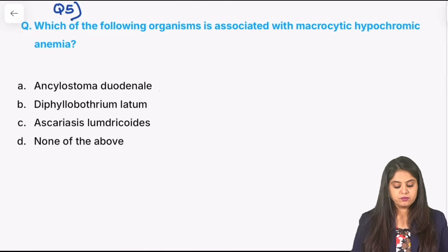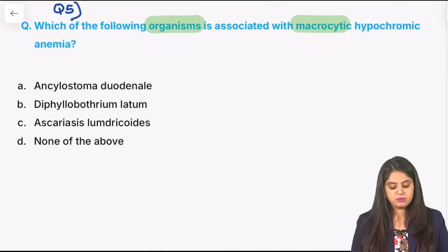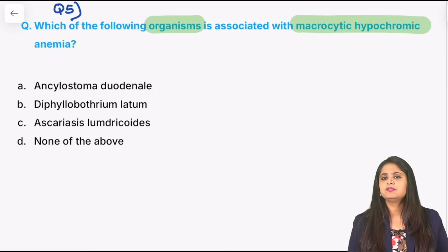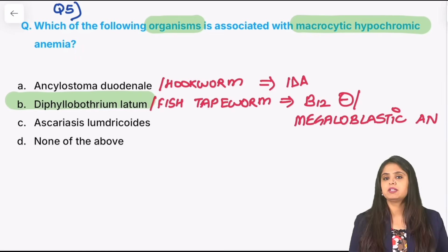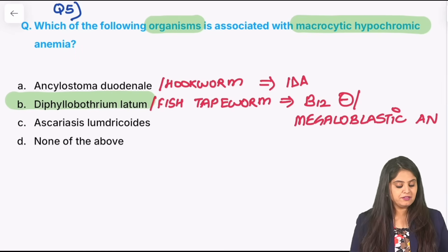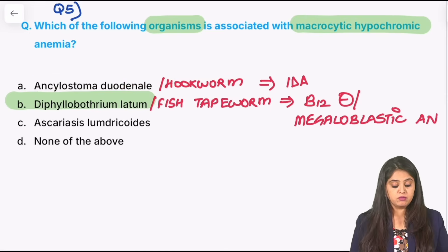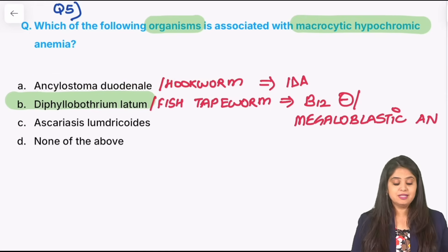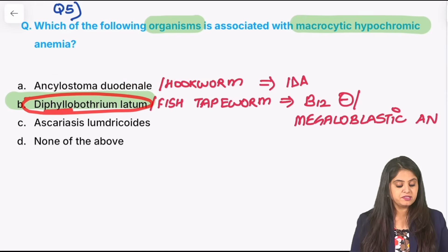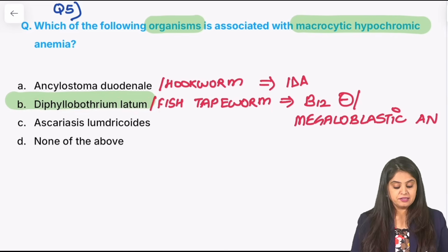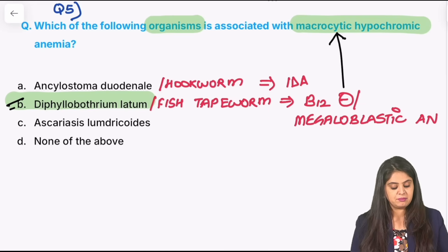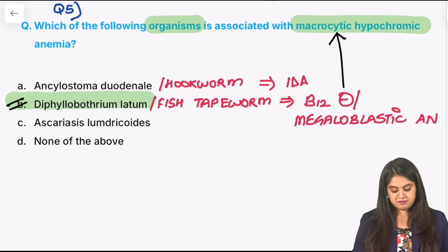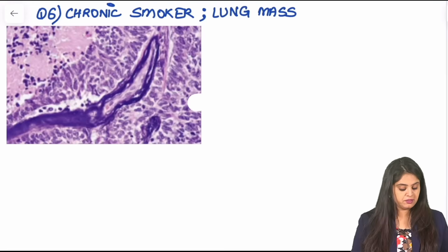Question five: which organism is associated with macrocytic anemia? Macrocytic suggests B12 deficiency, and that organism is Diphyllobothrium latum. Standard path-micro question: hookworm (Ancylostoma) causes iron deficiency anemia. Diphyllobothrium latum, the fish tapeworm, causes B12 deficiency or megaloblastic anemia, which is a macrocytic anemia. That's five questions done.